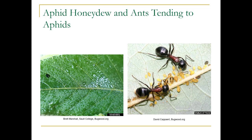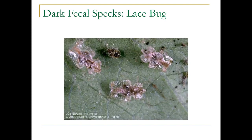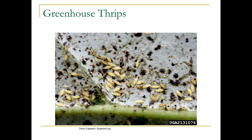Here are the fecal spots again from the lace bug. These are thrips — they're really tiny. Look at the main vein there — that's a very tiny insect, very difficult to see with the naked eye. You do need a hand lens, but these small black dots are going to be an indicator between that and the symptoms.